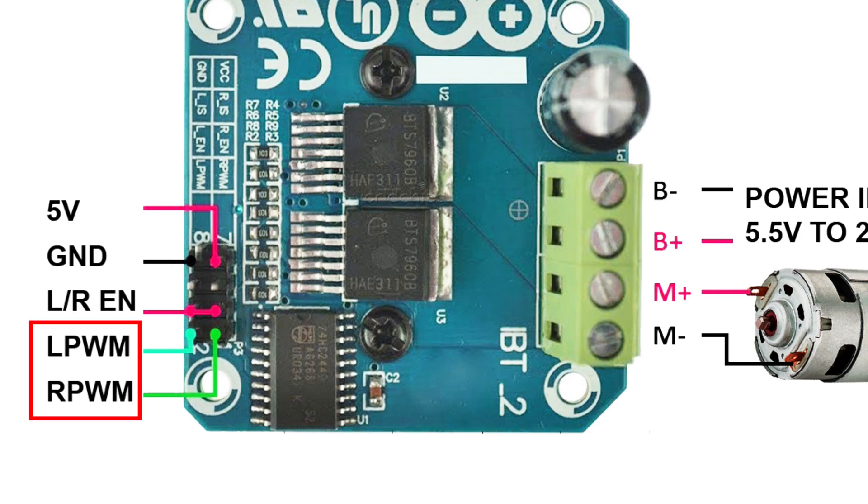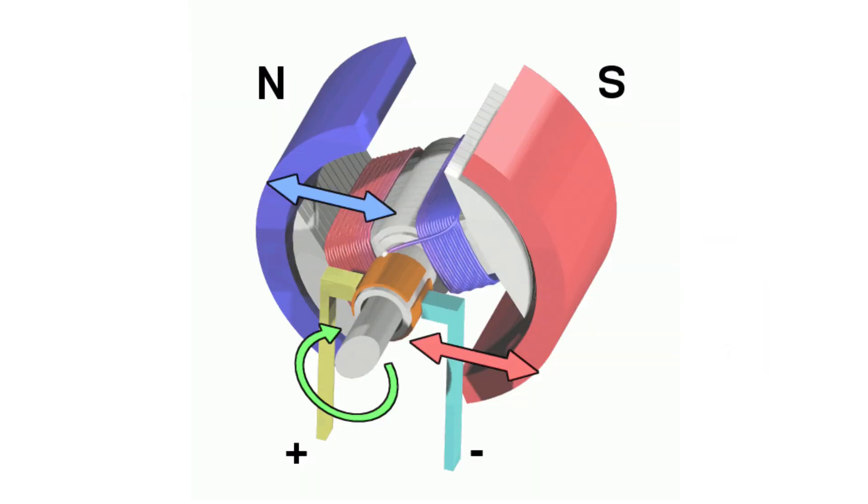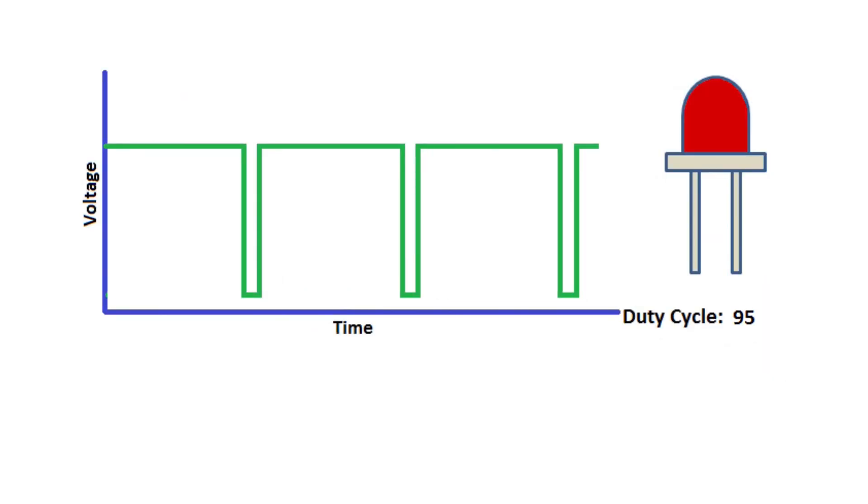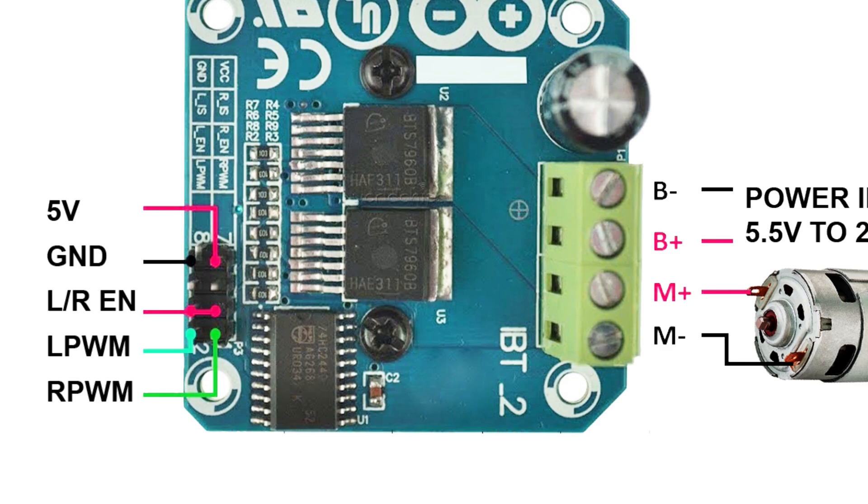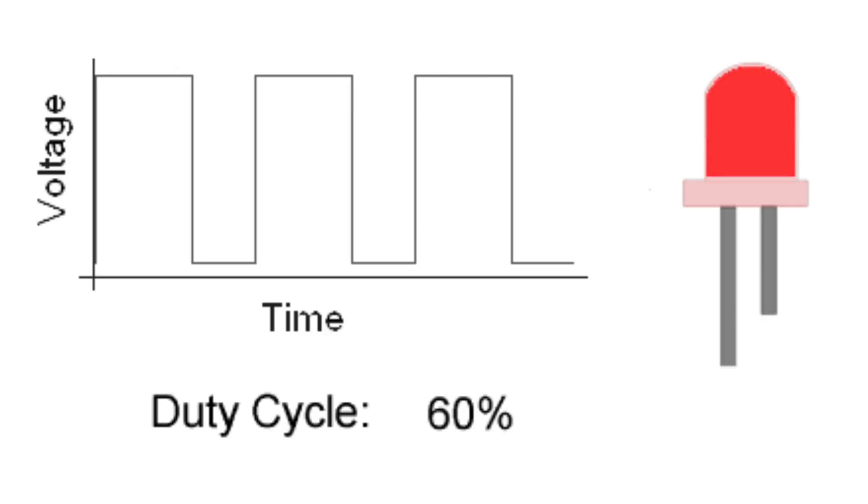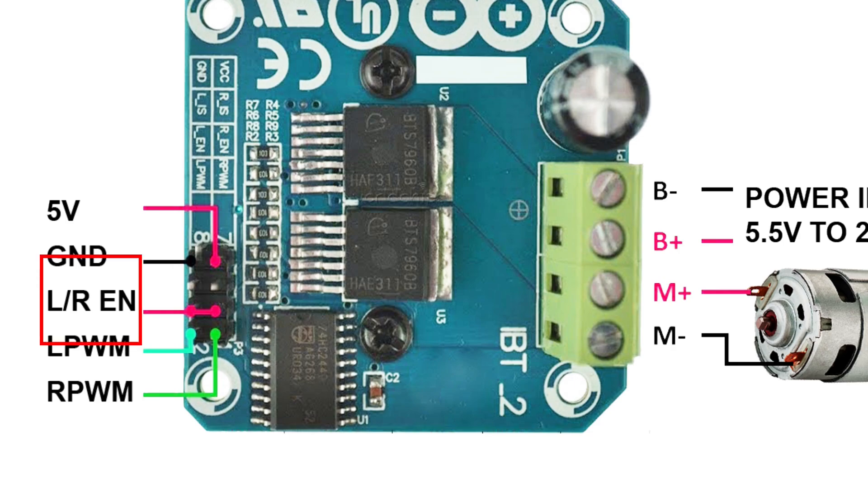R-PWM and L-PWM. These are the main control pins for motor direction and speed. You send PWM signals here. R-PWM makes the motor spin in one direction. And L-PWM spins it the other way. The higher the PWM value, the faster it goes. R-EN and L-EN. These are the enable pins. Set them high to activate the driver. Think of them like power switches for each direction, right and left.